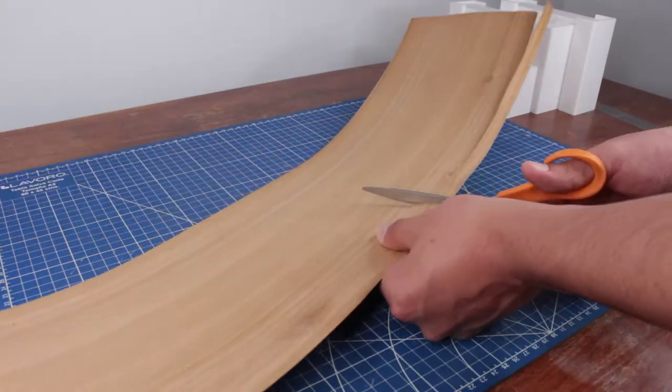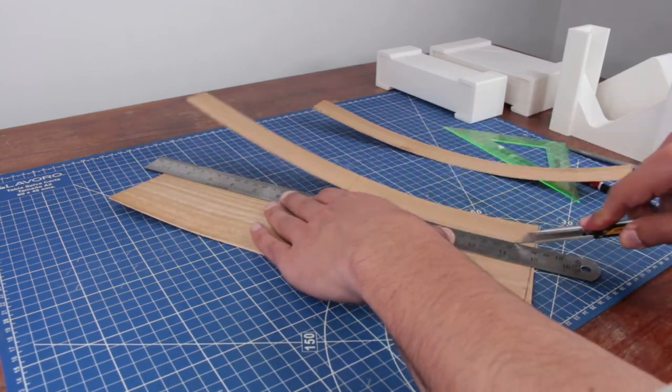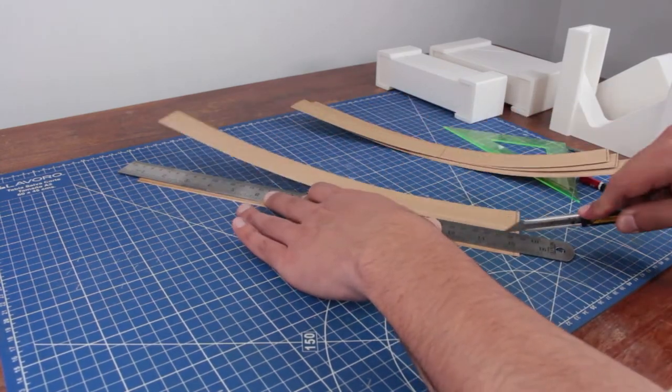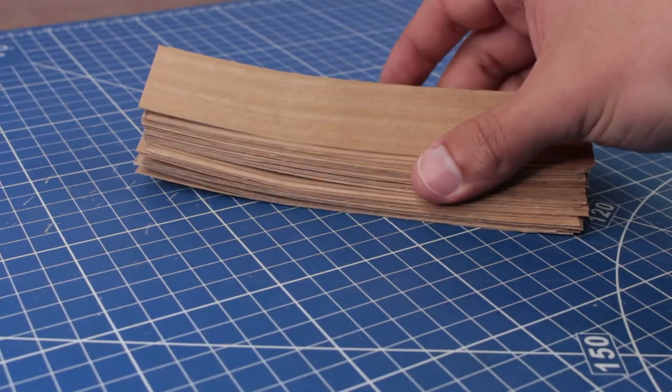To start this project I bought a big sheet of veneer. I cut the veneer into small rectangles, all the same size to fit inside the moulds.